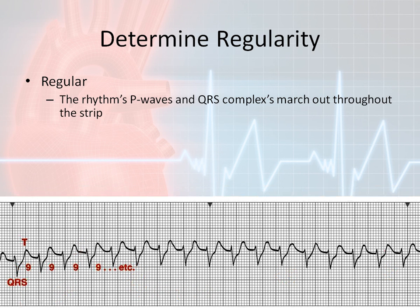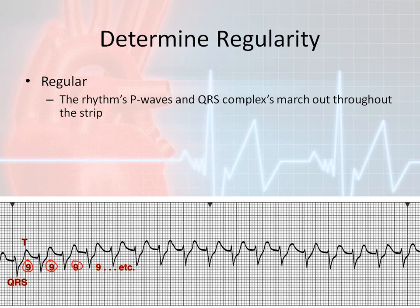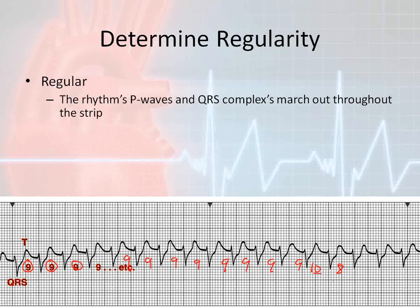This rhythm, as you can see, is considerably faster. Fortunately, they counted them out for us again — we're going to have nine little boxes, nine little boxes, nine little boxes, and all of these are approximately nine little boxes all the way across. Sometimes you might end up with one that's ten boxes or one that's eight boxes. This is not a big deal if you're varying one way or another from nine — it's still considered regular.